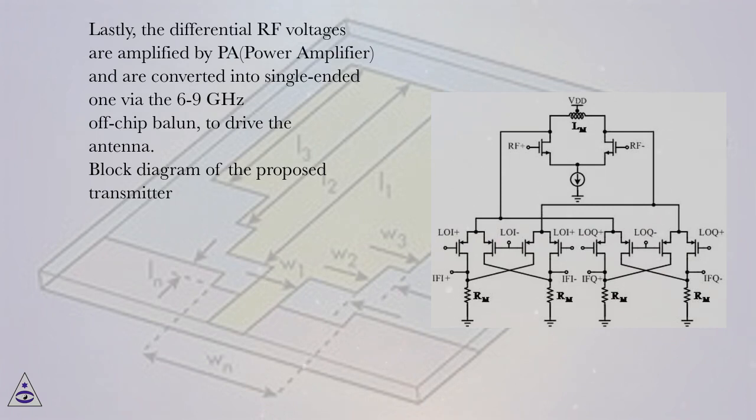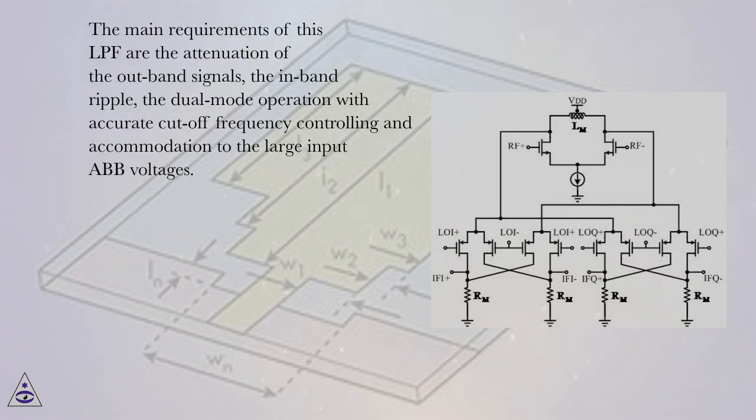Block Diagram of the Proposed Transmitter. The main requirements of this LPF are the attenuation of the outband signals, the in-band ripple, the dual-mode operation with accurate cut-off frequency controlling and accommodation to the large input ABB voltages.